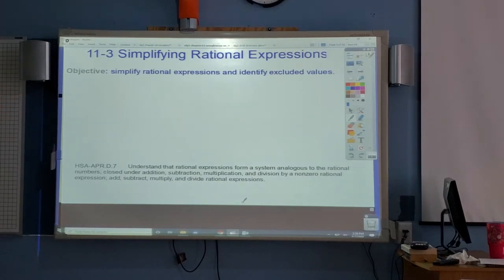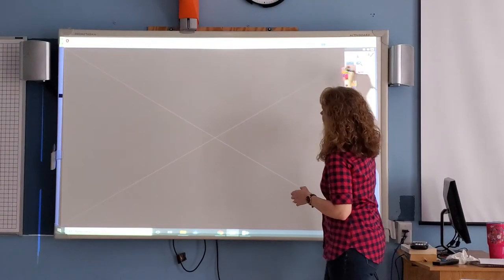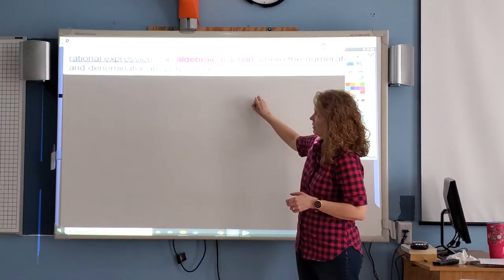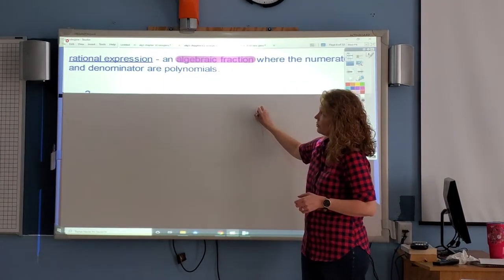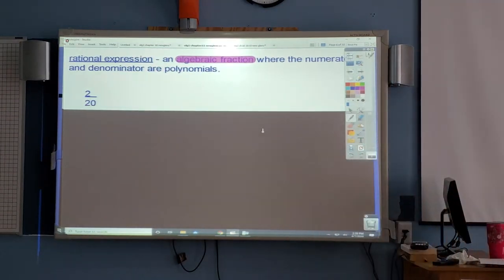I'm also going to talk about the excluded values, and I'm going to show you how you figure out what the excluded values will be for that problem. So let's start with a definition. A rational expression is an algebraic fraction where the numerator and denominator are polynomials.